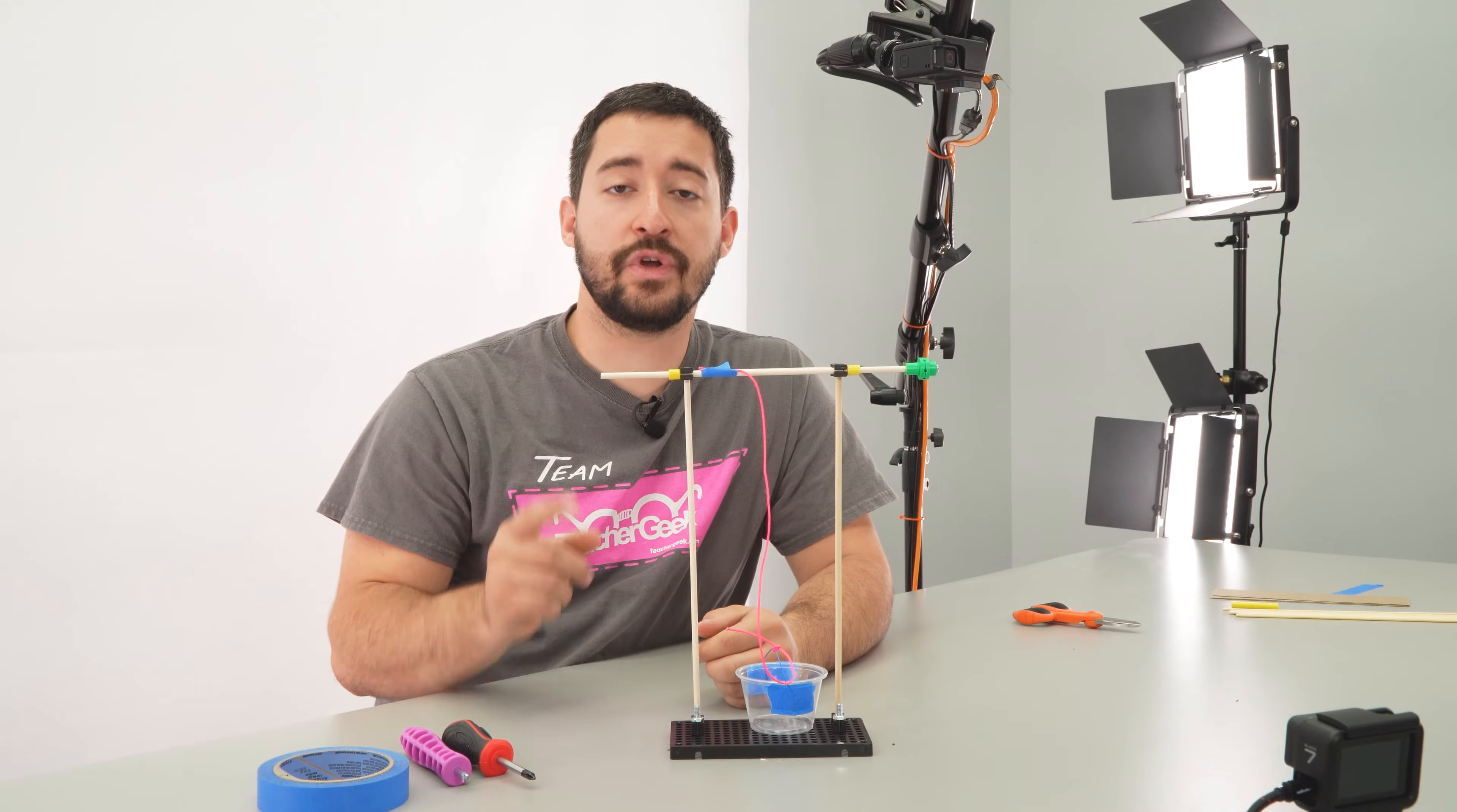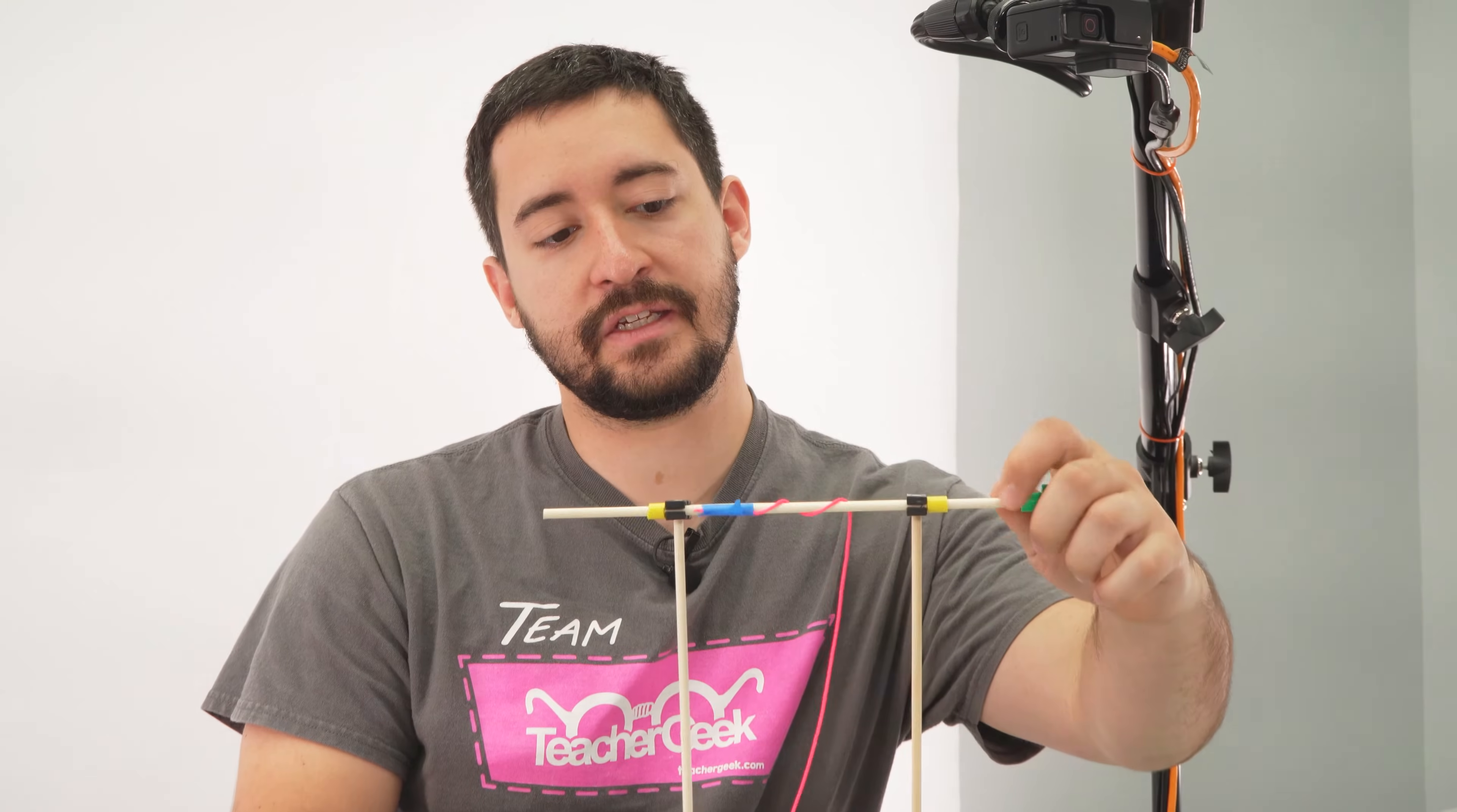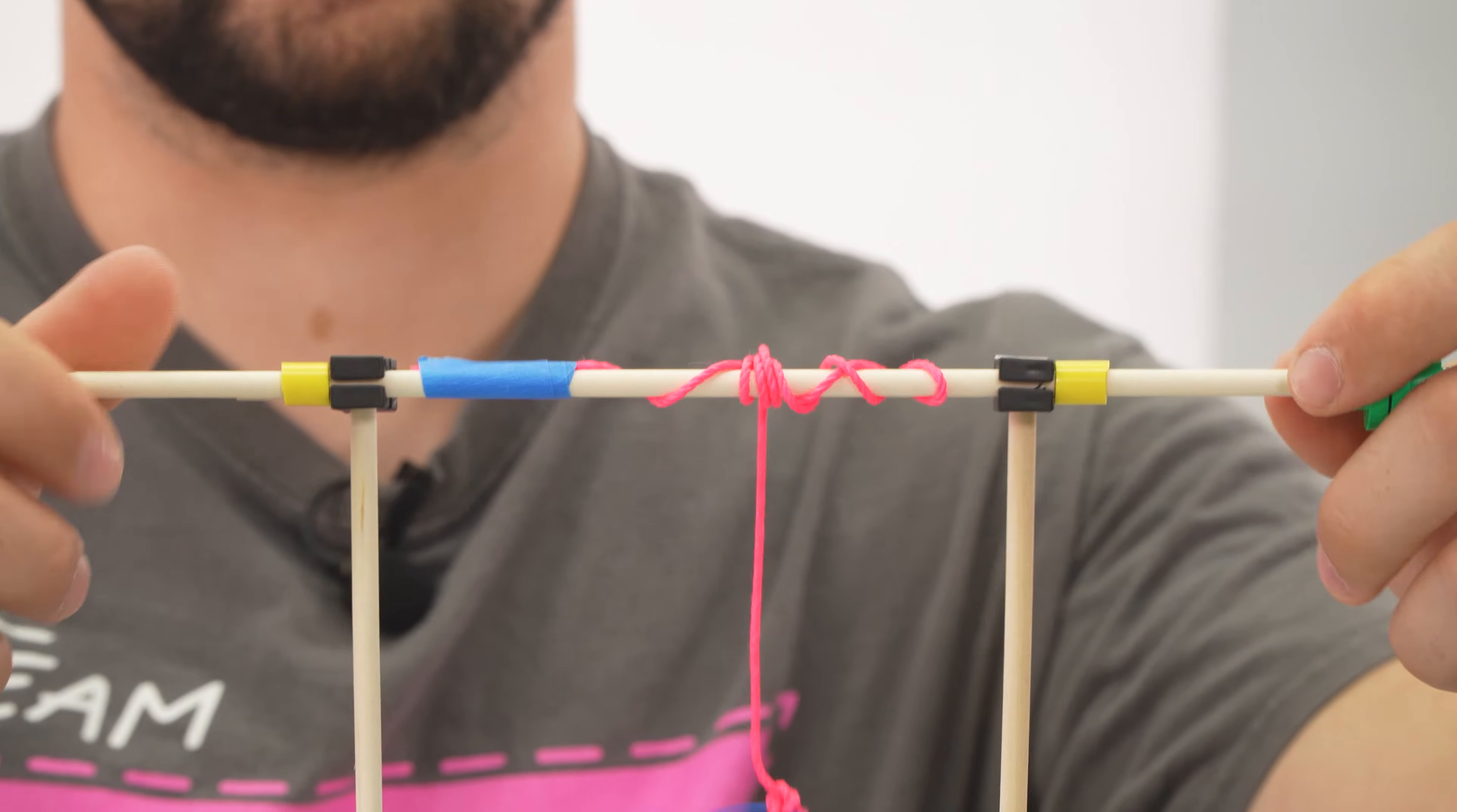What the blades will do is they're going to capture the wind and cause it to spin this dowel, wrapping the string around it and lifting up our weight holder.